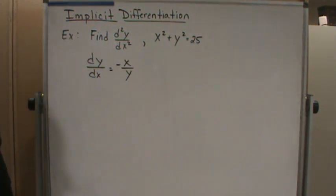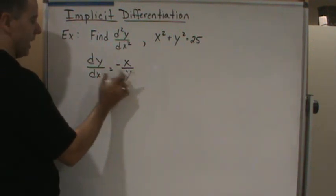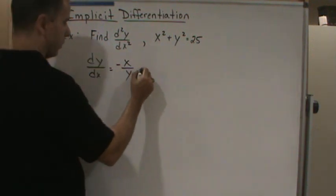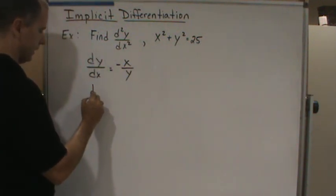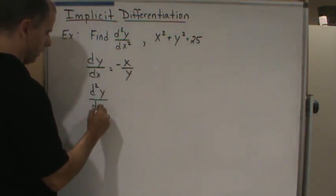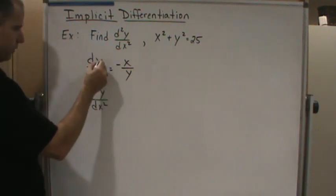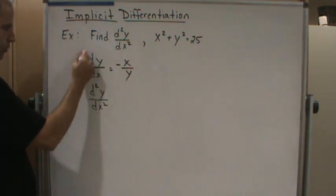Now what we're going to do is we're going to take the second derivative, which means we're going to take the derivative of both sides again. Okay, so that's going to give us d squared y over dx squared, right? Because we're taking this second derivative here.